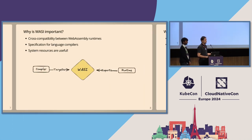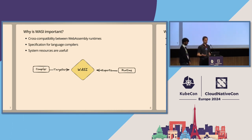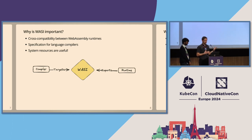We're talking about fairly bleeding-edge technology here with a lot of active development in the space. We need WASI because we need a portable interface that compilers and runtimes can work with. If the only supported toolchain was the combination of one compiler and one runtime, there would be no need for a standard specification. A specification for accessing system resources is important — programs need files, sockets, environment variables, clocks. I don't know what kind of useful program we can write without these primitives.